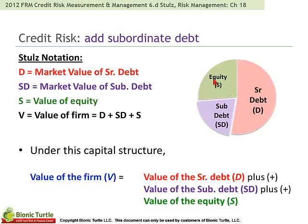And so the value of the firm — similarly, if this is the right-hand side, this is the capital structure — we say the value of the firm is the sum of the senior debt, the subordinated debt, and the equity.